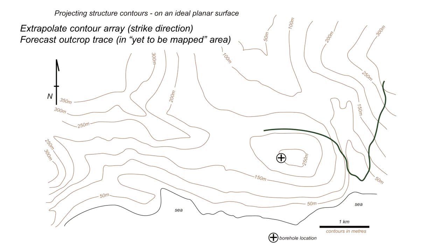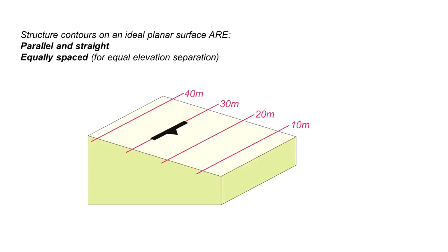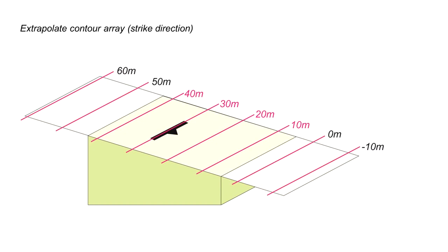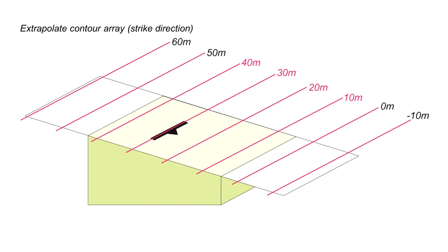Next, we extrapolate the structure contour array in the strike direction to forecast the outcrop trace of the geological boundary in the yet-to-be-mapped area. Returning to the block diagram: for an ideal planar surface, structure contours are parallel, straight, and equally spaced. We used this to project in the dip direction; now we take those projections and further extrapolate in the strike direction to infer the position of the geological boundary.